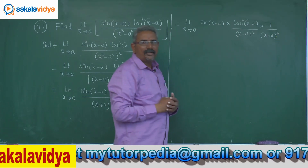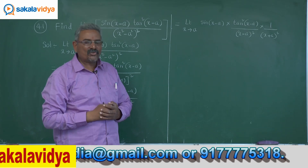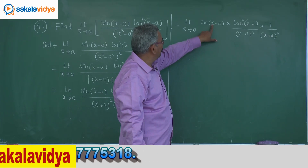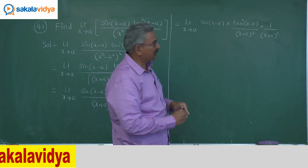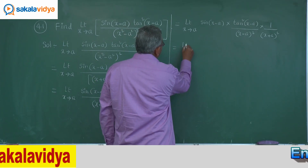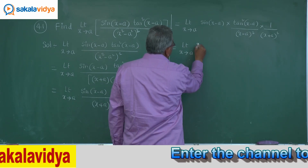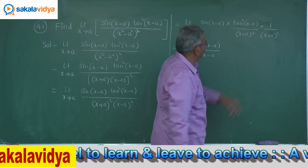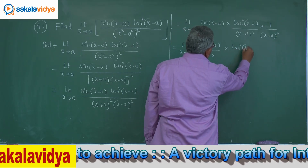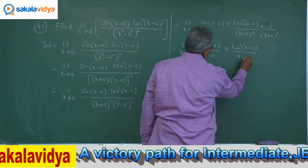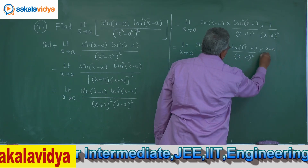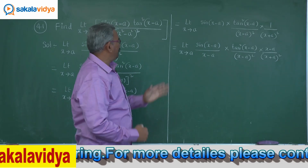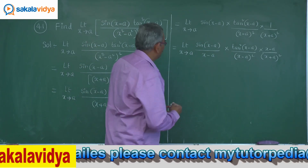Please check this step — does it make any difference? No, it does not make any difference, so we can proceed. But here, in order to write sin theta by theta, we need x minus a in the denominator. So multiply and divide by x minus a. Now this can be written as: the limit x tends to a of sin(x minus a) by (x minus a), multiplied by tan square(x minus a) by (x minus a) whole square, into (x minus a) by (x plus a) whole square. Now let the limit be applied to each function separately.